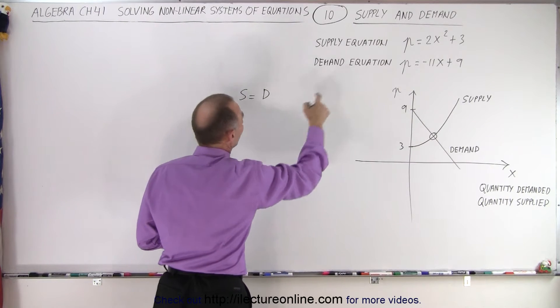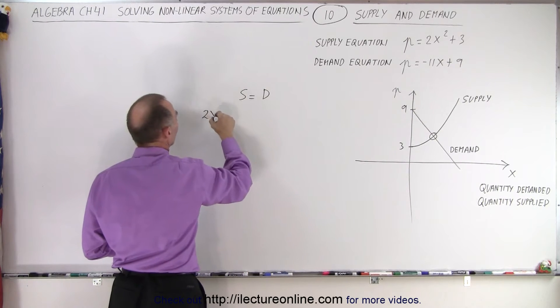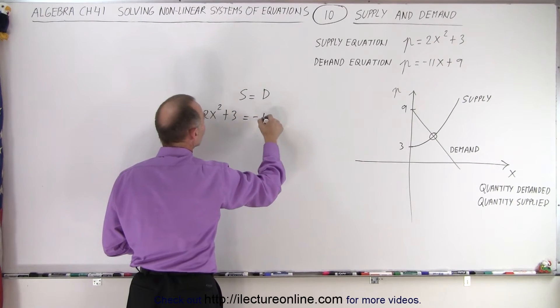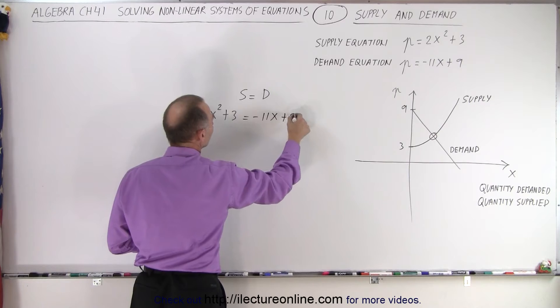So in this case, the supply equation is 2X squared plus 3. And on this demand equation, we have minus 11X plus 9.